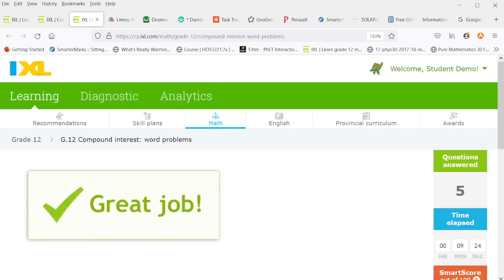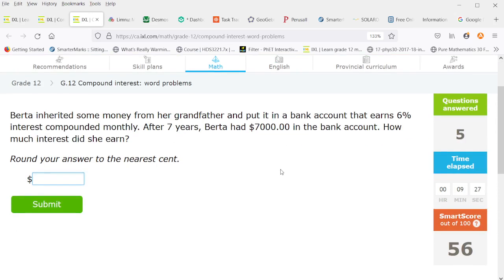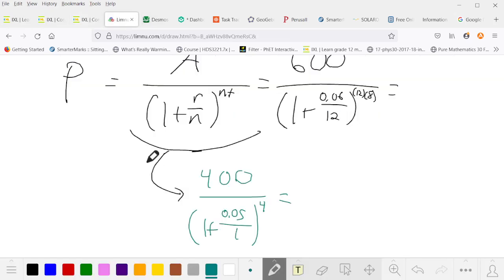And one of these days, I have to find one of the banks that show up in these word problems that don't charge any other service fees of any kind. Berta inherited some money from her grandfather and put it in a bank account that earned 6% interest compounded monthly. After seven years, she has $7,000 in the account. How much interest did she earn? Notice it's not asking for the principal this time. It's how much interest did she earn? So that's not the $7,000. That's not the P of the principal. The amount of interest earned is the amount we have in the end minus the principal.